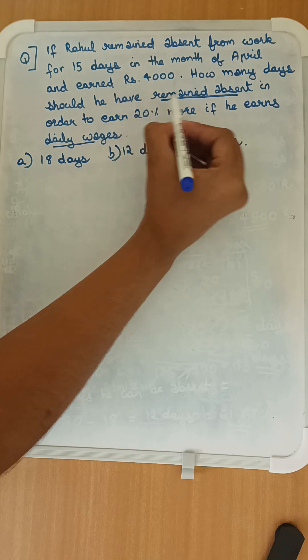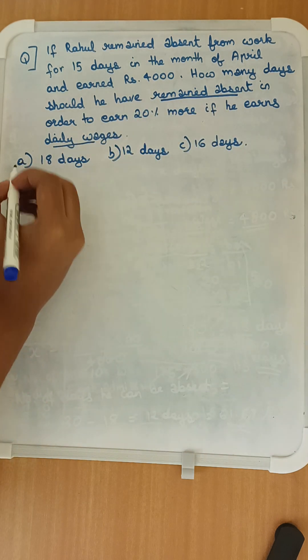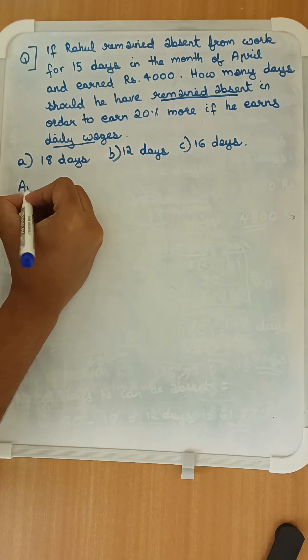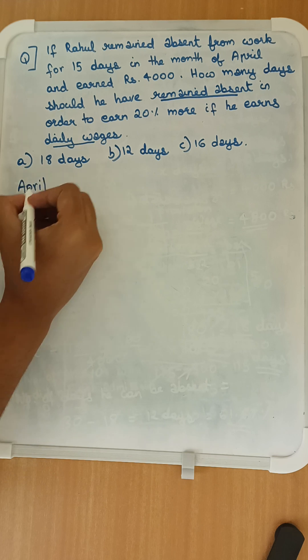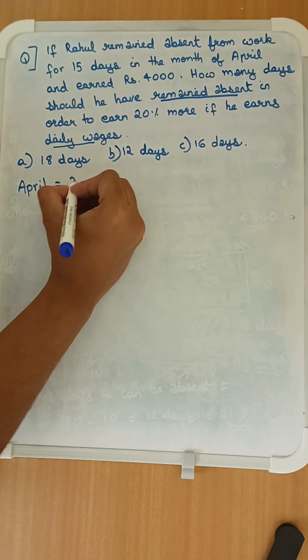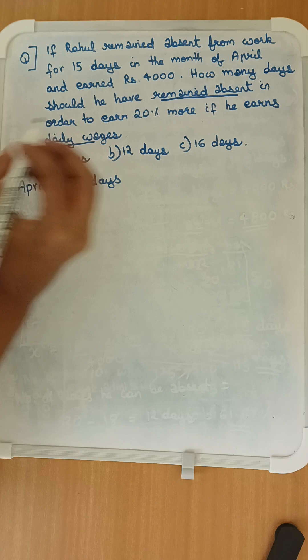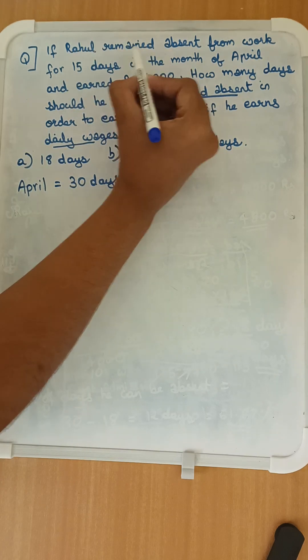The first thing is they have mentioned it is for the month of April. So for the month of April, the number of days are 30.